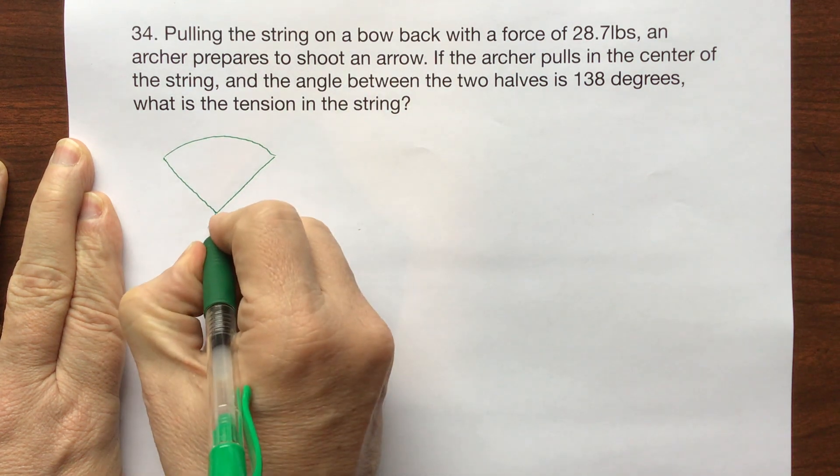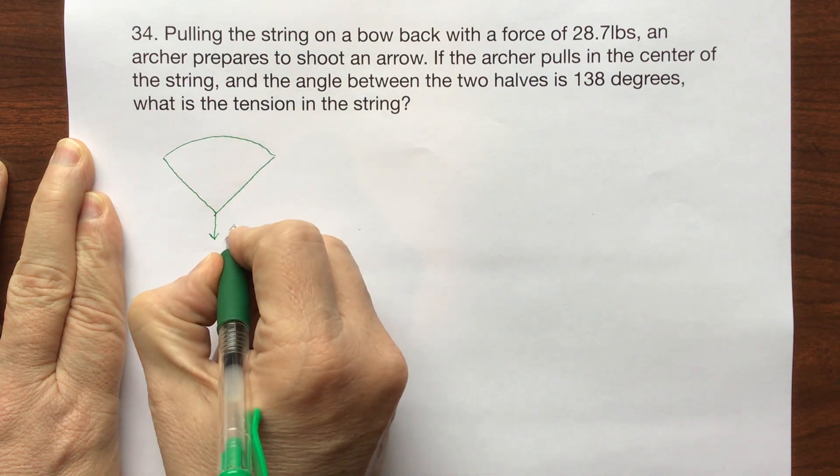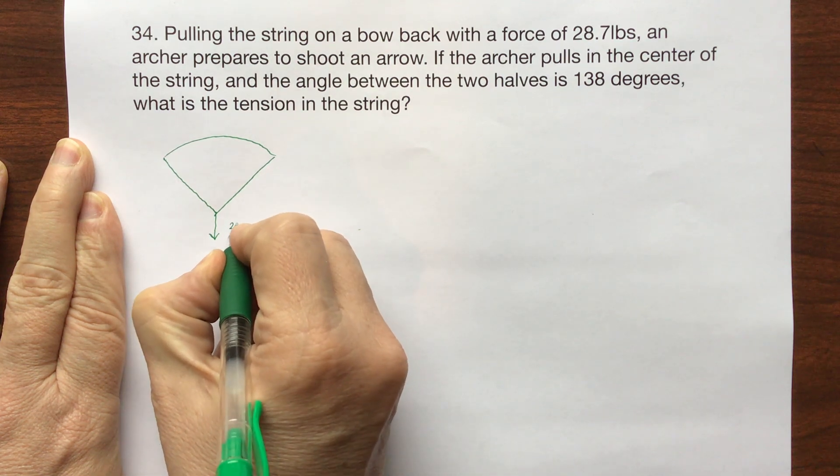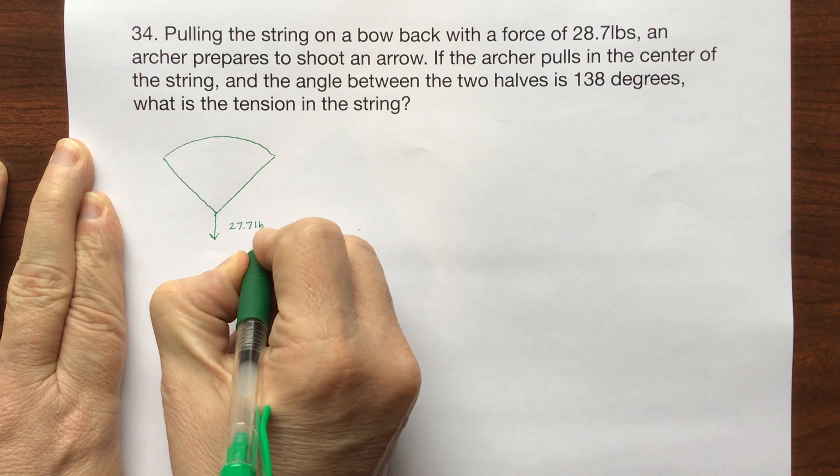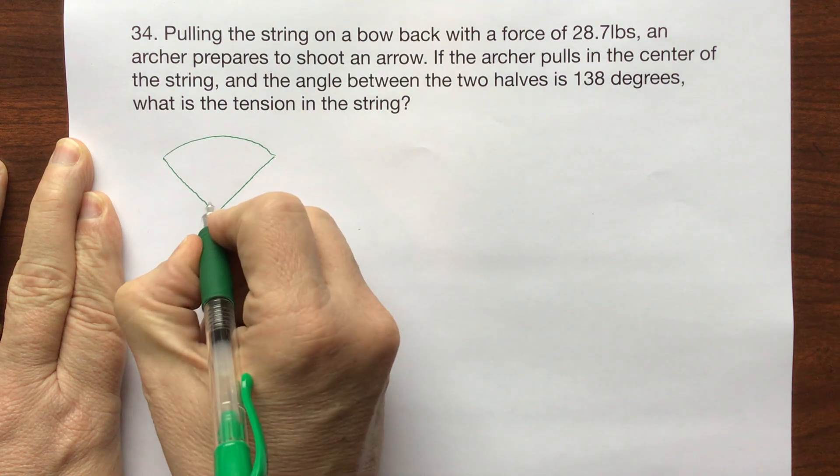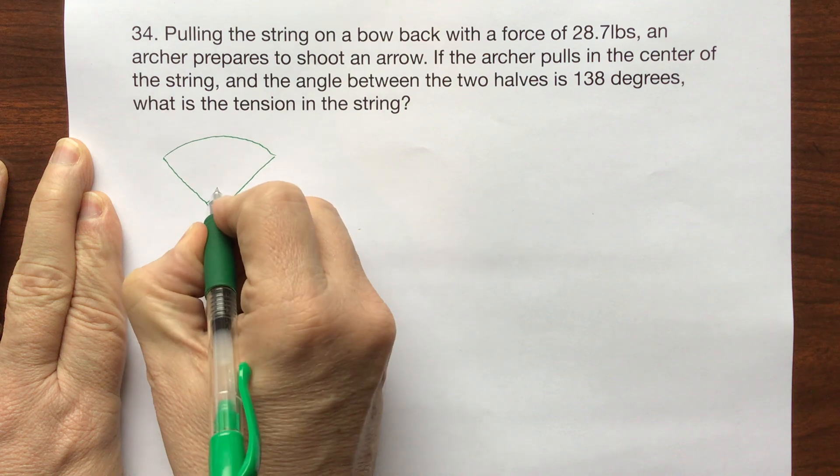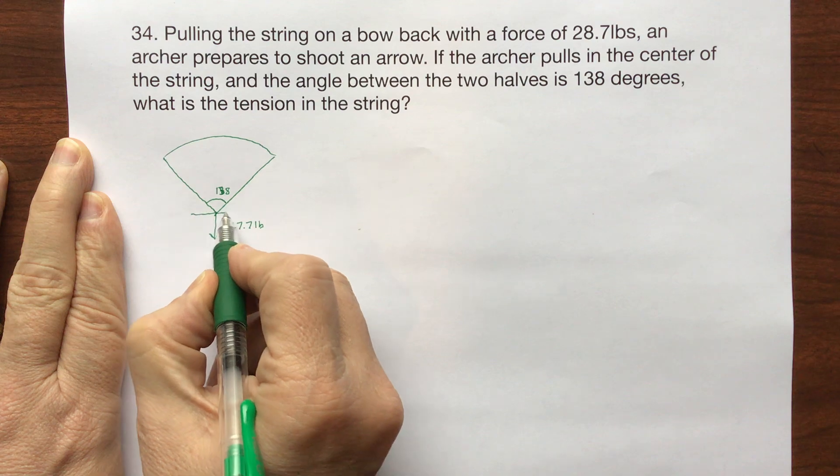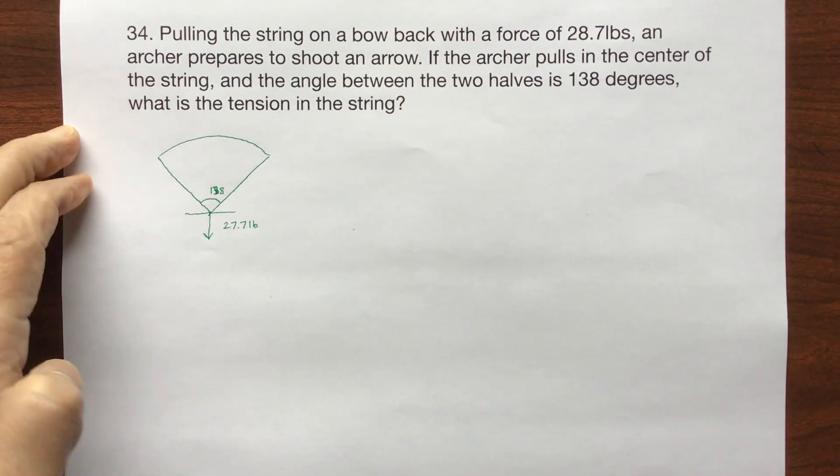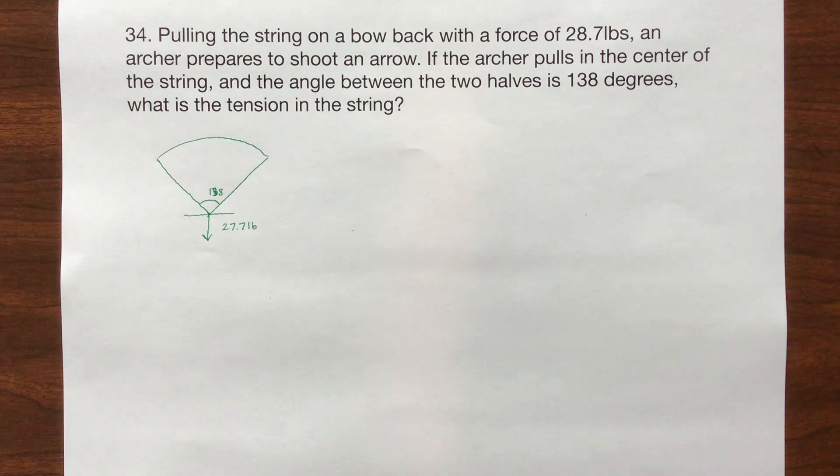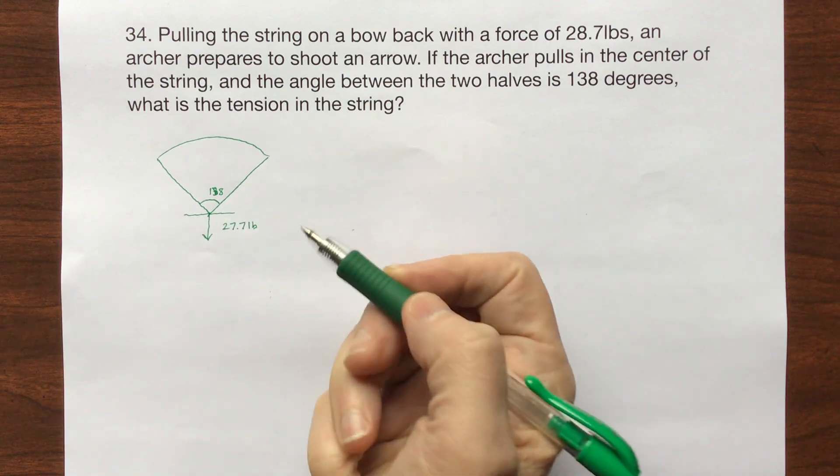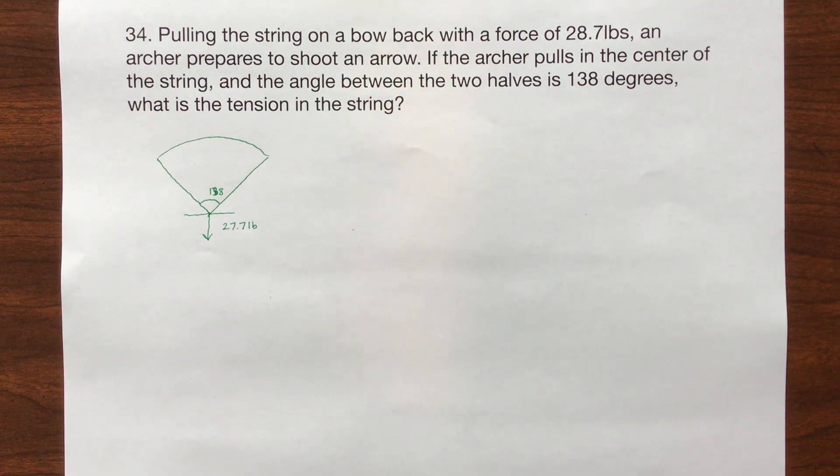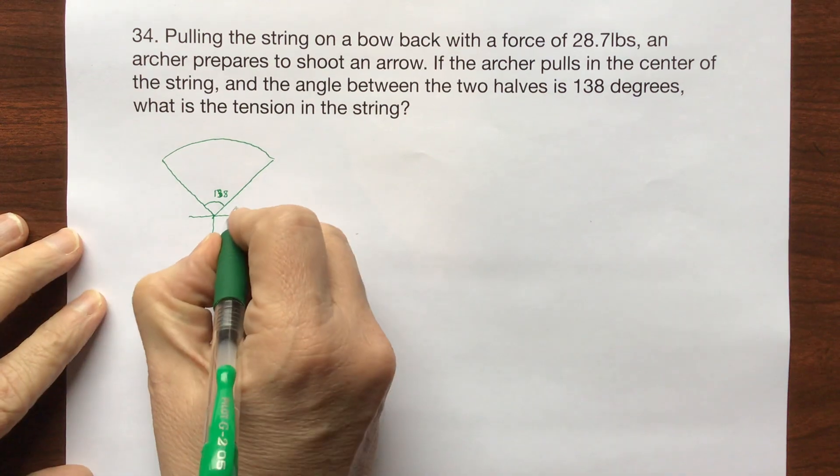We're gonna see that the force that I'm pulling back is going to be equal to 27.7 pounds. Alright, so if this angle here is 138 and a straight angle is 180, then 180 minus 138 is 42, and there's 42 degrees split between these two halves. So when I divide by two I'm gonna have 21 degrees here and 21 degrees here.